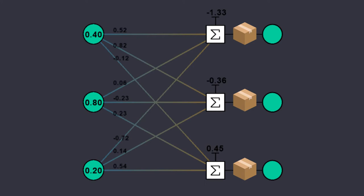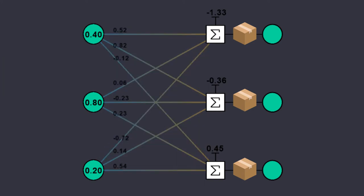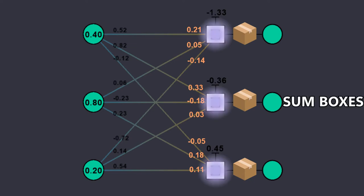These numbers travel to the next node thanks to the connection lines. Every time a number takes its fourth step on a connection line, it must be multiplied by the weight of that line. The results obtained continue their journey through the end of the line, where they enter the sum boxes.